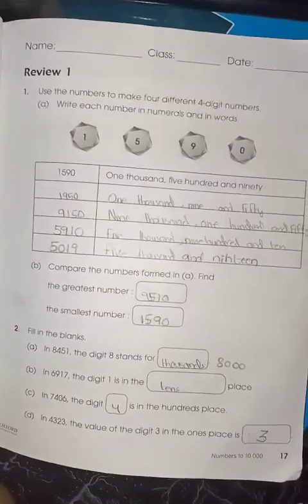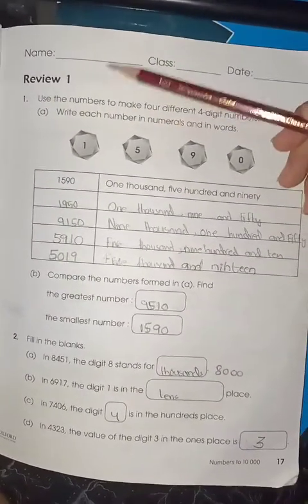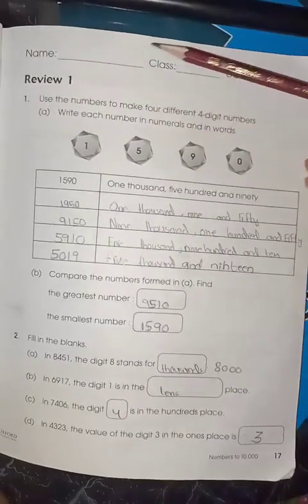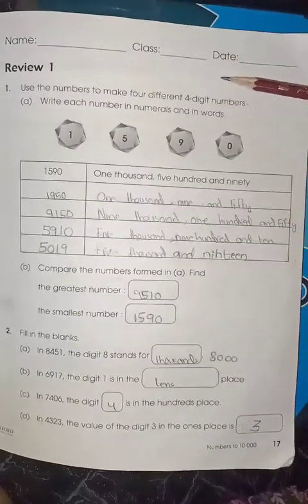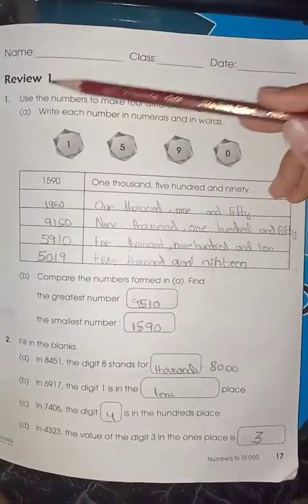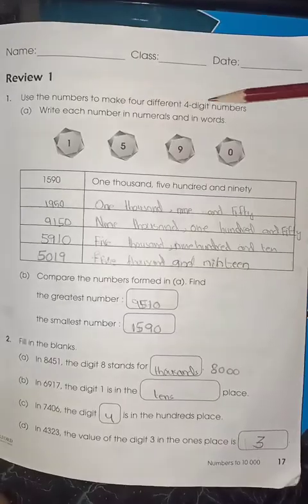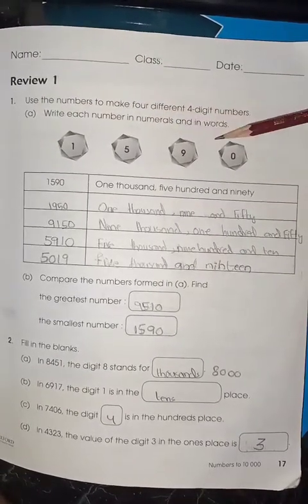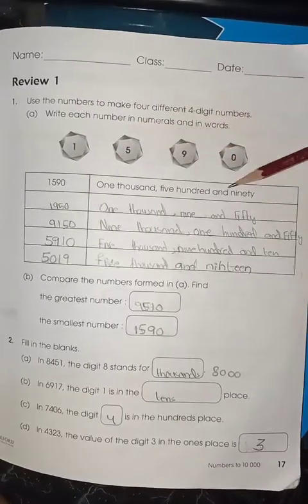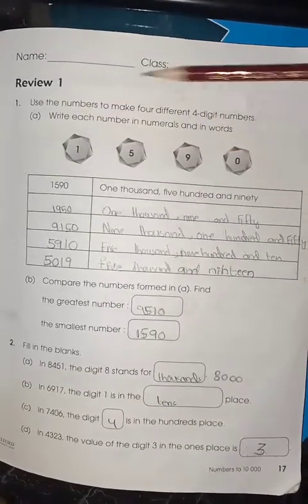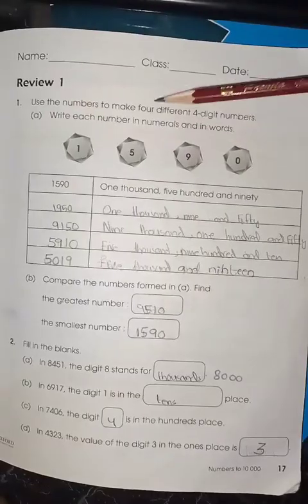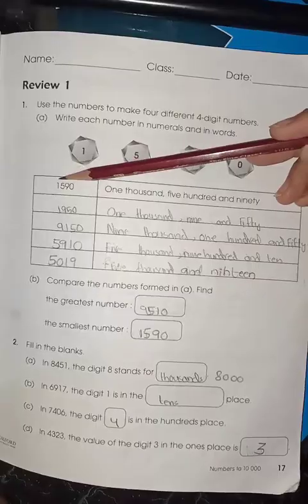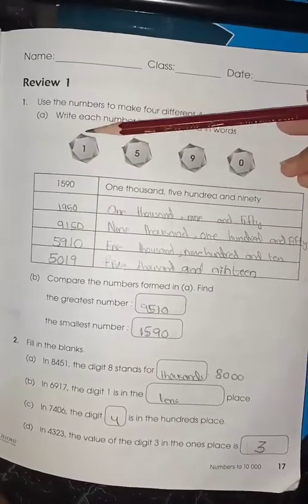Next page, page number 17. Here is your review, the practice work of the complete chapter. Again write your name, class, and date. The question is: use the numbers to make four different digit numbers. Write each number in numeral and in words. Here are 1, 5, 9, 0.